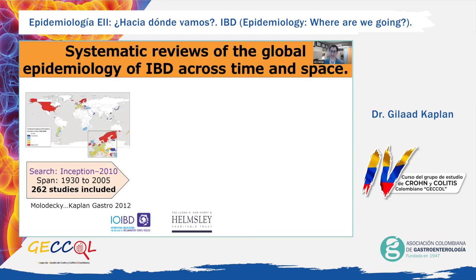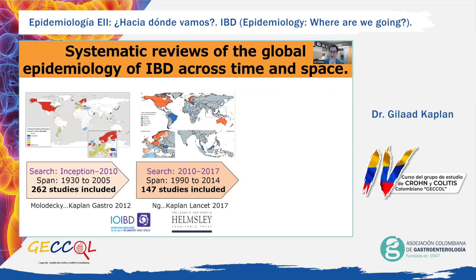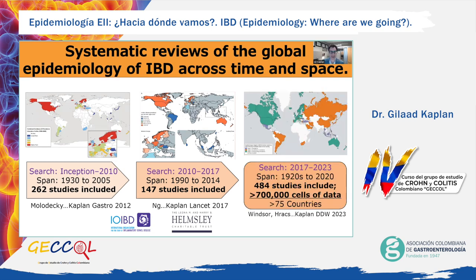I want to start by explaining how we acquired the data to define epidemiological stages. This journey started in 2012 when my lab published a systematic review on over 260 population-based studies on the incidence and prevalence of IBD. Sue Ng from the Chinese University of Hong Kong and I updated this analysis, focusing on the time period 1990–2014, which we published in Lancet. In collaboration with Dr. Ng and IOIBD, supported by Helmsley Charitable Trust, my lab presented at DDW in 2023 in Chicago our updated analysis of over 480 published studies spanning 100 years, from the 1920s to 2020.